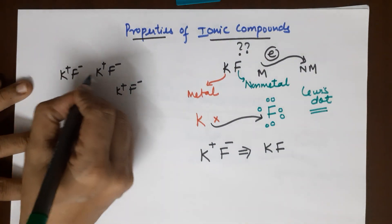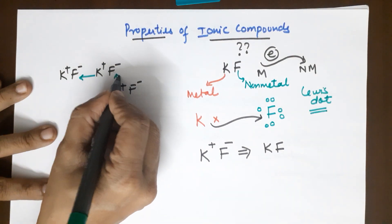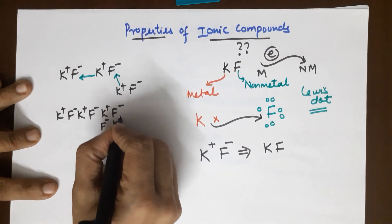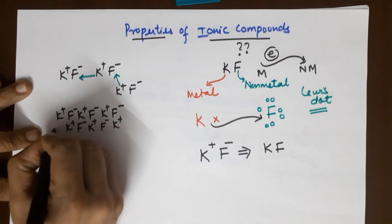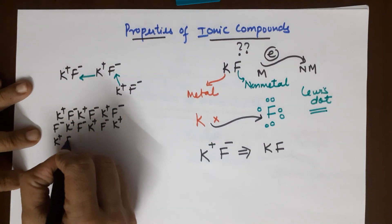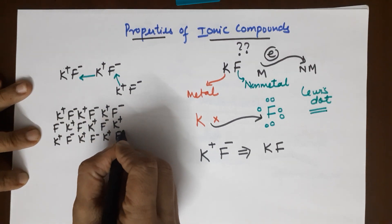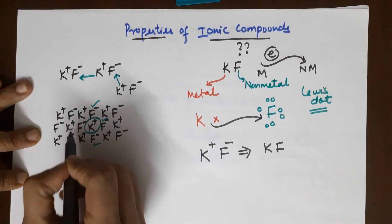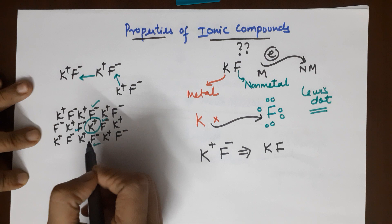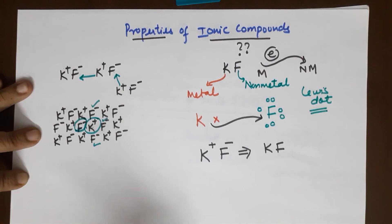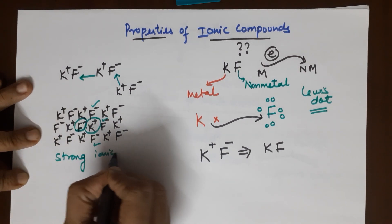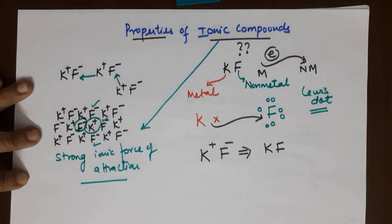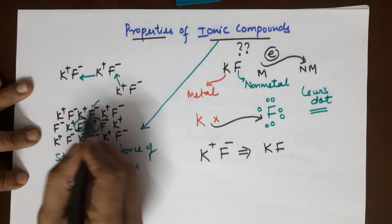If I have many potassium fluorides, they would not be far from each other — this fluoride will attract this potassium, and hence you would have an ordered arrangement of positive and negative ions. I have deliberately arranged the positive ions around the negative ions and the negative ions around the positive ions. This potassium is surrounded by four F ions — the negatively charged ions. Any negative ion is similarly surrounded by four potassium ions. So there is a strong ionic force of attraction, and these ions are tightly packed.